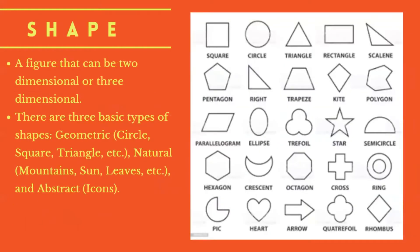The second element is shape. This element shows a figure which can be two-dimensional or three-dimensional. This element has three types. The first one is geometric, which we commonly use, like circle, square, rectangle, and triangle. The second one is natural, which we can see in nature like trees, mountains, leaves, and flowers. Lastly, abstract — this kind of shape doesn't show the exact representation of the image.